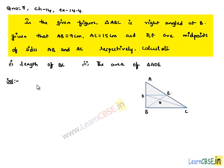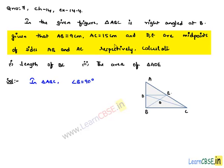Now moving on to the solution. Here it is given that in triangle ABC, angle B equals 90 degrees, and it is also given that AB equals 9 cm, AC equals 15 cm, and we are asked to find the length of BC and the area of triangle ADE.